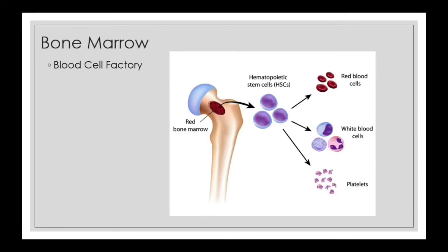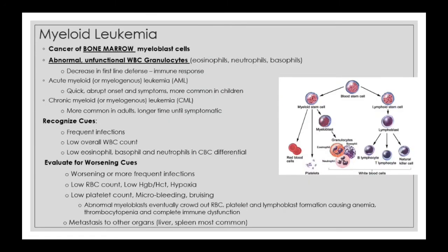The bone marrow is our blood cell factory. There are stem cells in our bone marrow that are programmed to divide into either red blood cells, white blood cells, or platelets. There are two kinds of leukemia: myeloid and lymphatic.